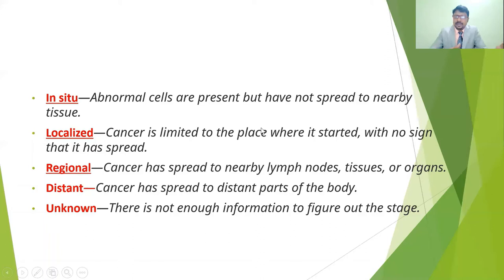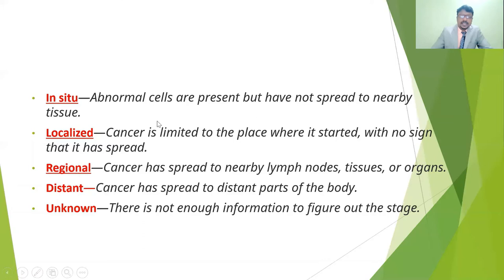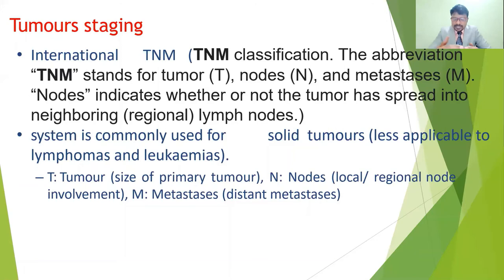Some cancers have insufficient information to determine the stage — we cannot say whether the cancer shifted through the bloodstream or lymphatic system, or identify its grade, location, or region. In those conditions, it is classified as unknown staging.